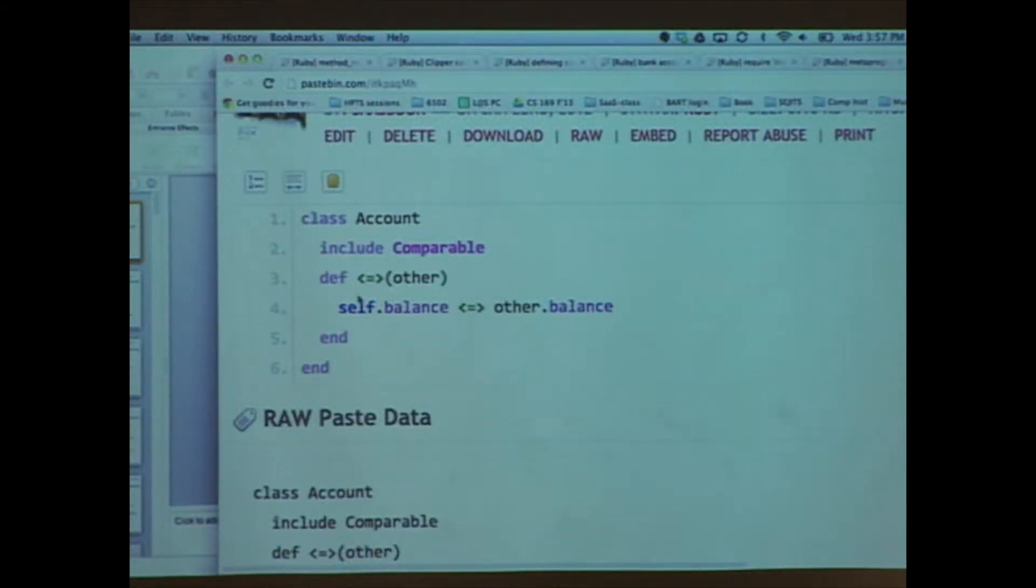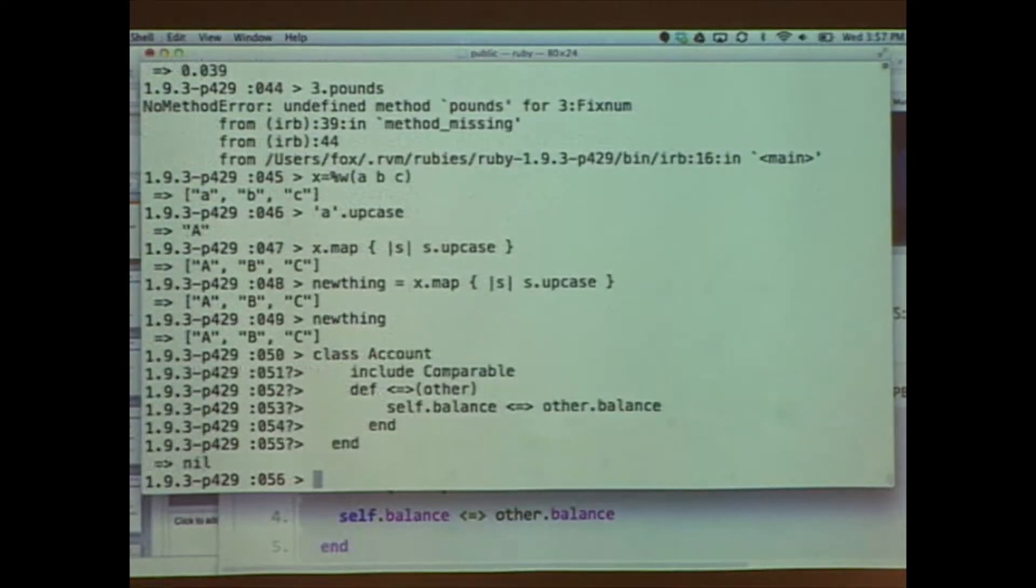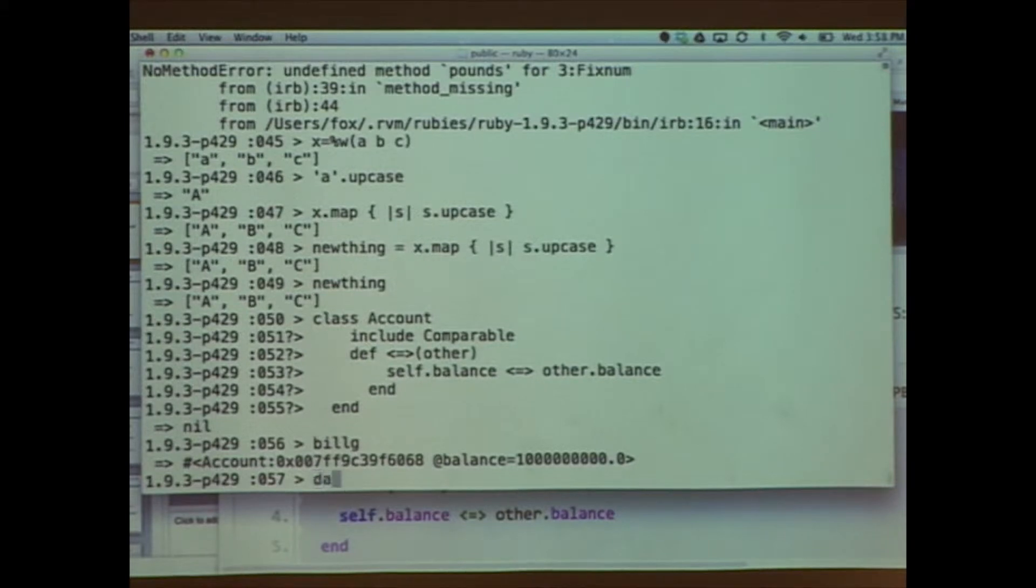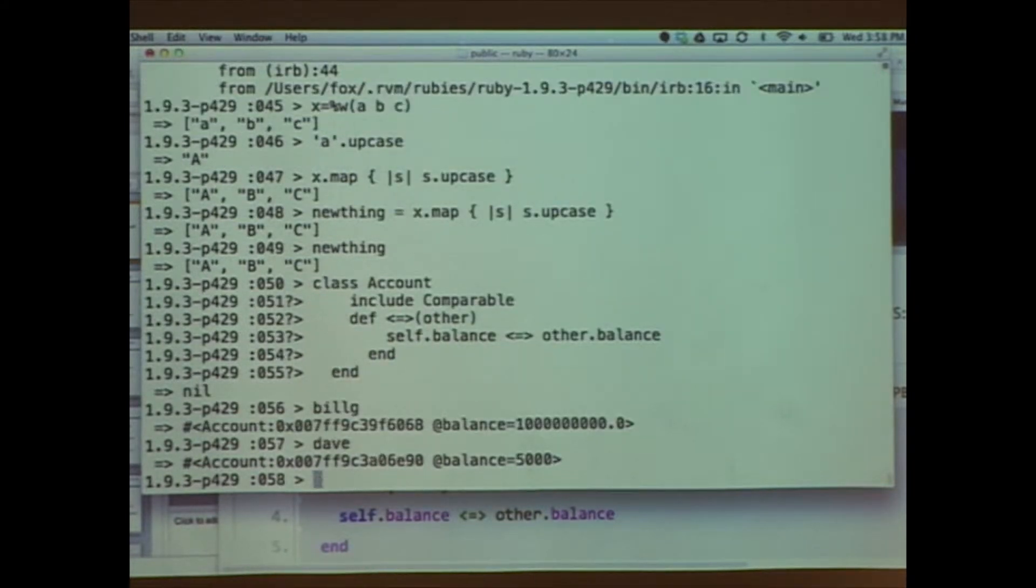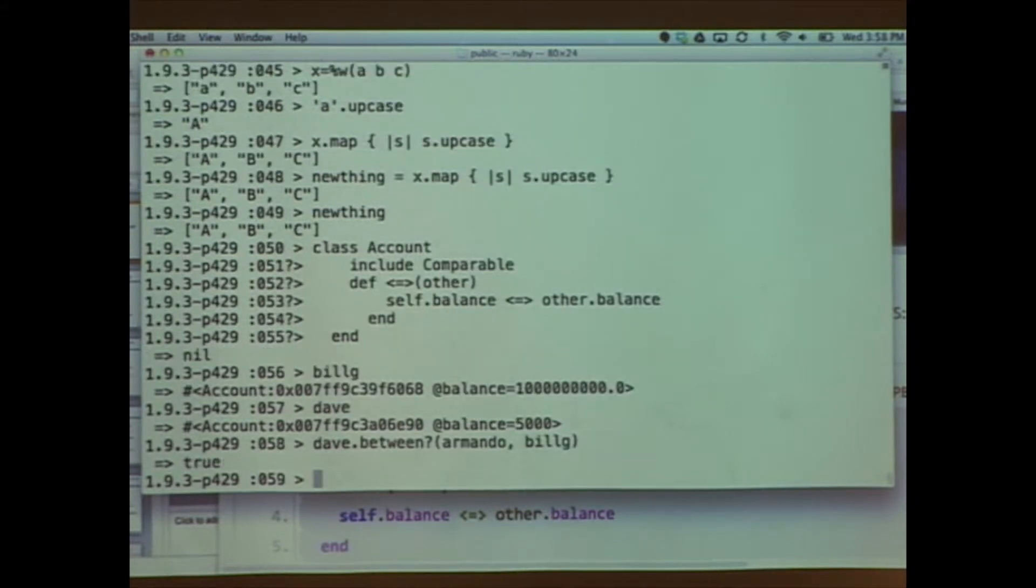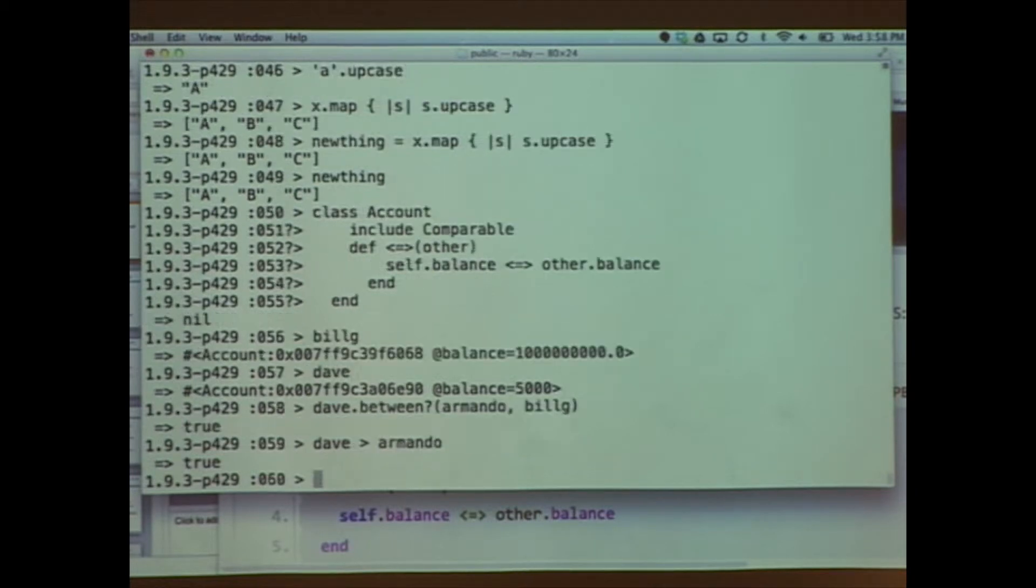So here's a way you define comparison on bank accounts. I'm lazy so I'm just going to define spaceship and then I'm going to include comparable to get the other ones for free. And in case you don't believe me I will copy and paste that code. I already had the class account defined so now remember I had these accounts with high balances and I can say okay? True in so many ways.